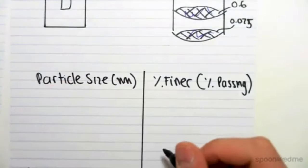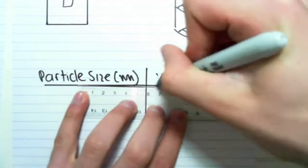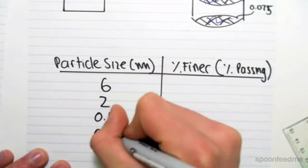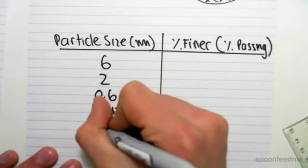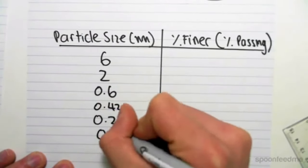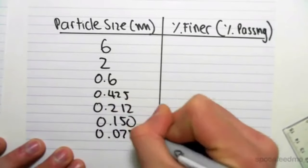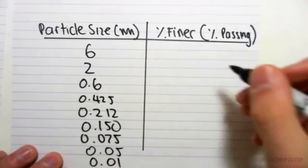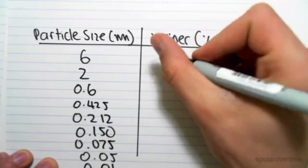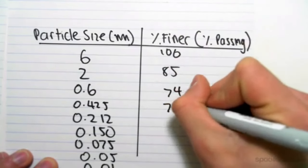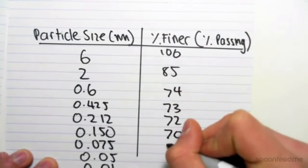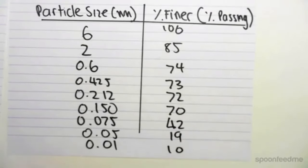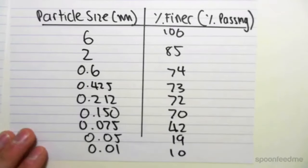For example, say we would have 6 millimeters, 2 millimeters, 0.6, 0.425, these are just standard sieve sizes, they're not random, 0.212, 0.150, 0.075, 0.05, and normally we would have 0.01. Just for example, say 100% pass through, 85, 74, 73, 72, 70, 42, 19, and 10. I'm just making these values up. We come up with this table, and this table compares the particle size to percent finer.